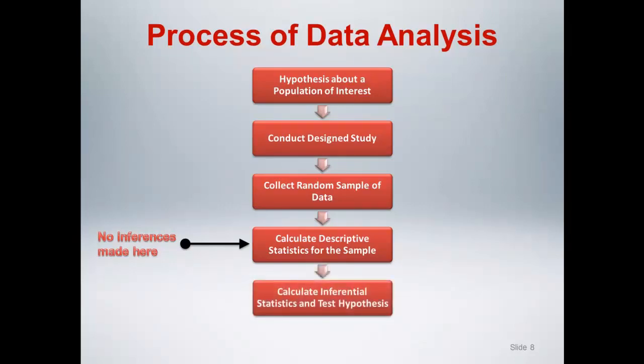After this descriptive process we are ready to make population inferences. The specific statistical quantities we use for making inferences, that is, the inferential statistics, are a function of the research hypothesis, the study design, and the primary outcome variable being used to evaluate our hypothesis. The process of making inferences generally involves the calculation of p-values and confidence intervals, each of which we will discuss throughout the course.